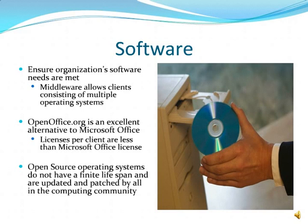Now we're going to talk about the software components of a network operating system. It must ensure organizations' software needs are met. Middleware allows clients consisting of multiple operating systems — Mac, Linux, and Windows — to access resources from an open source server. OpenOffice.org is an excellent alternative to Microsoft Office, provided via Oracle. The only problem with OpenOffice is compatibility with Microsoft Office database files. Licenses per client are less expensive, and open source operating systems do not have a finite lifespan — they are updated and patched by the computing community.